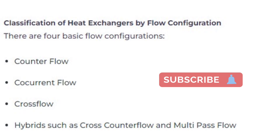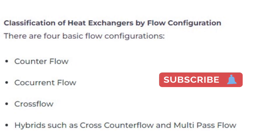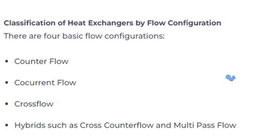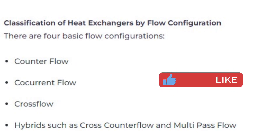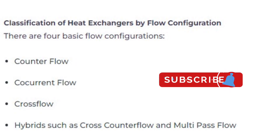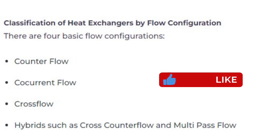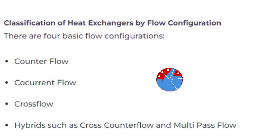Co-current flow does provide more uniform wall temperatures. Cross-flow heat exchangers are intermediate in efficiency between counterflow and parallel-flow exchangers; in these units, the streams flow at right angles to each other. In industrial heat exchangers, hybrids of the above flow types are often found, such as combined cross-flow/counterflow heat exchangers and multi-pass flow heat exchangers.